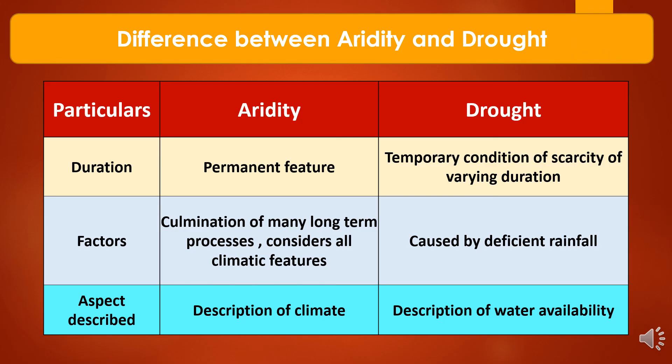The difference between aridity and drought: as per duration, aridity is a permanent feature while drought is a temporary condition of scarcity of varying duration. As per factors, aridity is the culmination of many long-term processes considering all climatic features, while drought is caused by deficient rainfall. As per the aspect of description, aridity is a description of climate, while drought is a description of water availability.